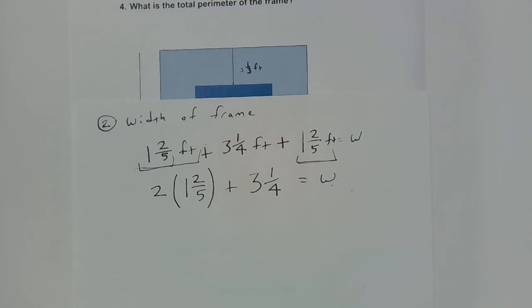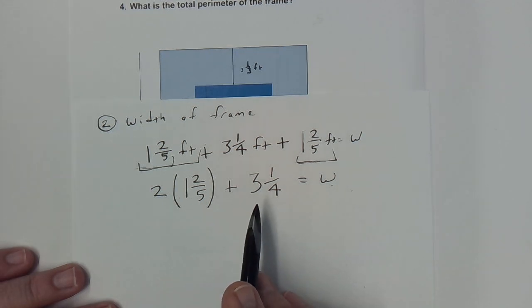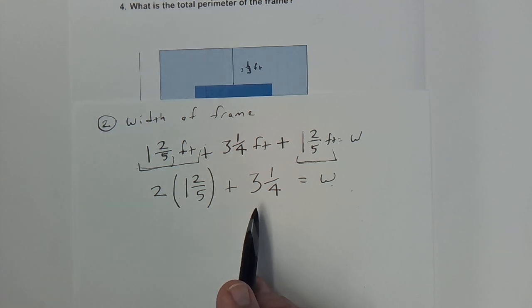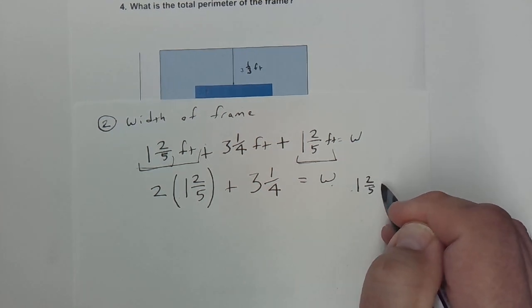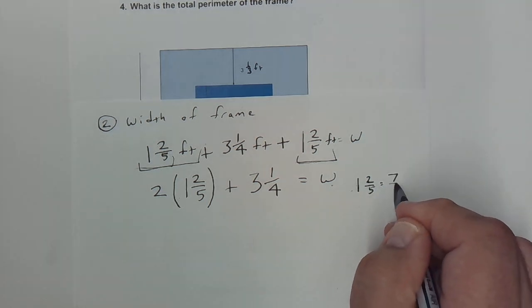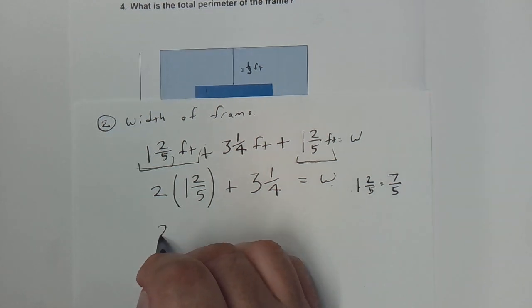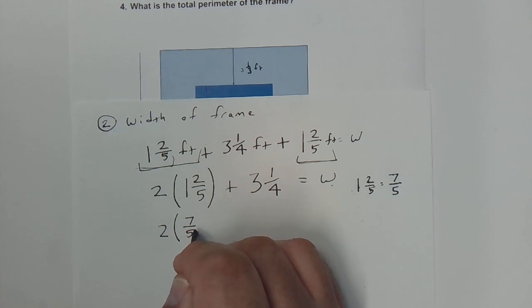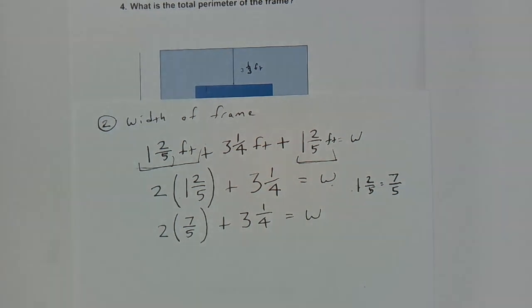We'll multiply this out by converting to improper fractions. For one and two-fifths: 1 × 5 + 2 = 7, so that's 7/5. Rewriting: 2 × (7/5) + 3¼ = W. Multiplying straight across: 2 × 7 = 14, denominator stays 5, giving 14/5. Then we convert three and a quarter: 3 × 4 + 1 = 13, so 13/4. So our equation becomes 14/5 + 13/4 = W.